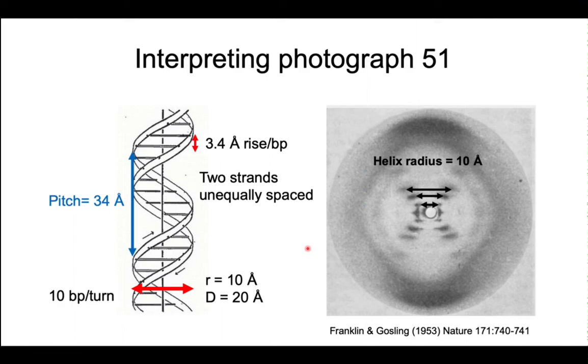Finally, the spacing between the spots gives the helix radius. And so you calculate a radius of 10 angstroms or a diameter of 20 angstroms, which is really exactly the diameter of B-DNA.